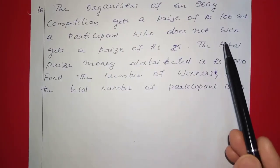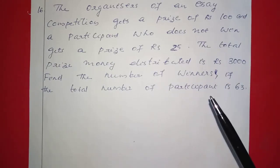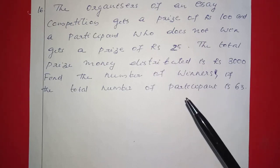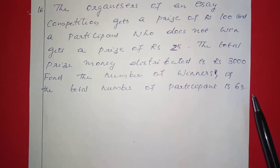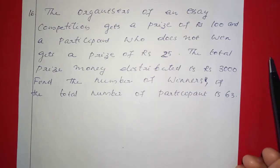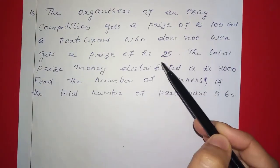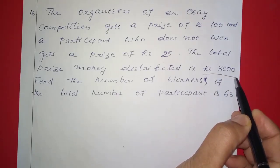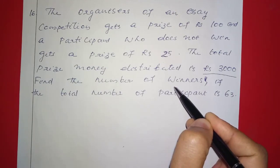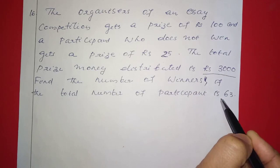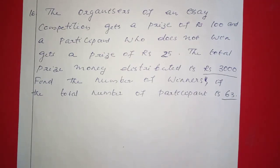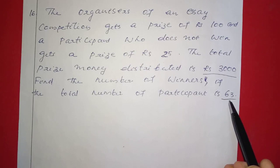The organizers of an essay competition give a prize of 100 rupees to each winner and 25 rupees to each participant who does not win. The total prize money distributed is 3000 rupees. Find the number of winners if the total number of participants is 63. We will form a linear equation.